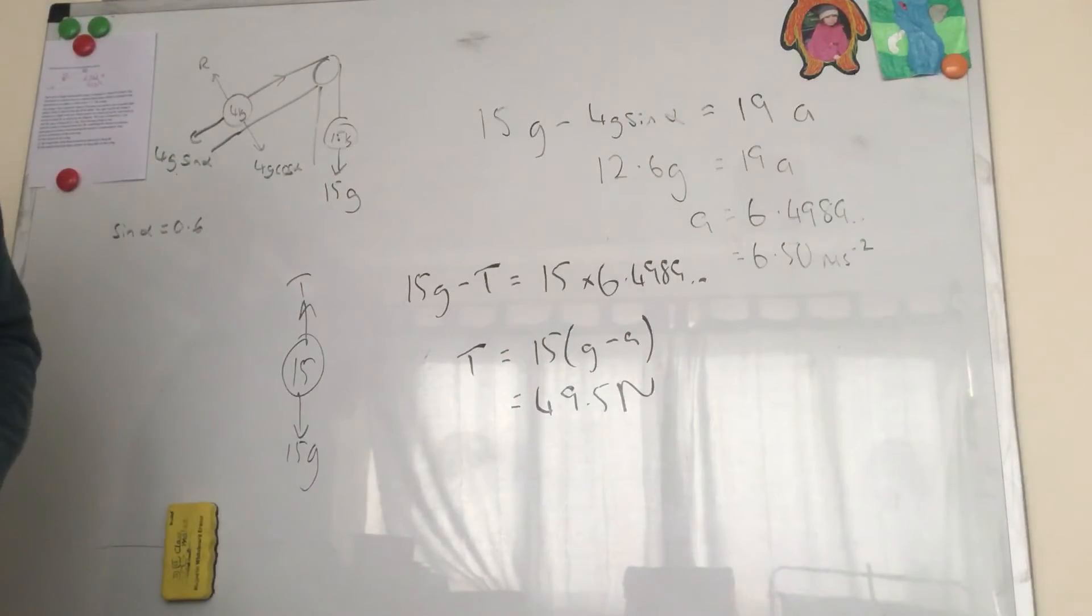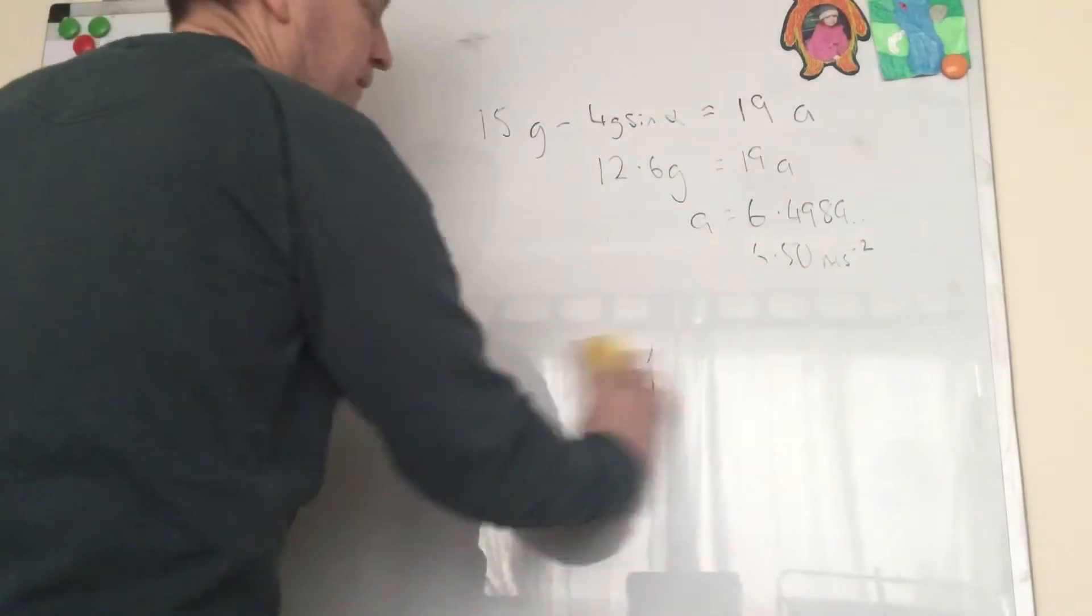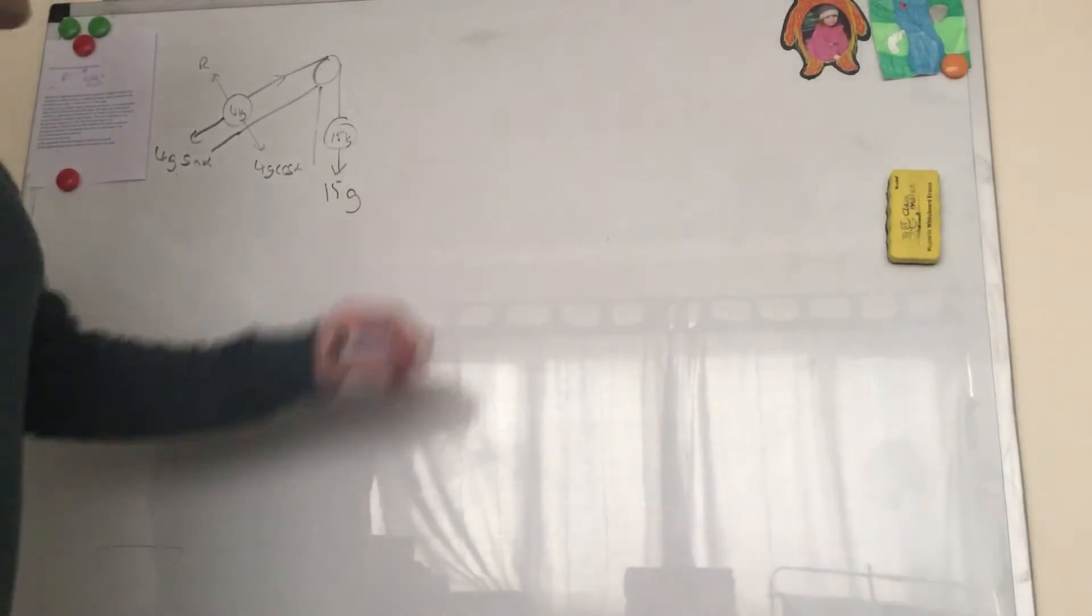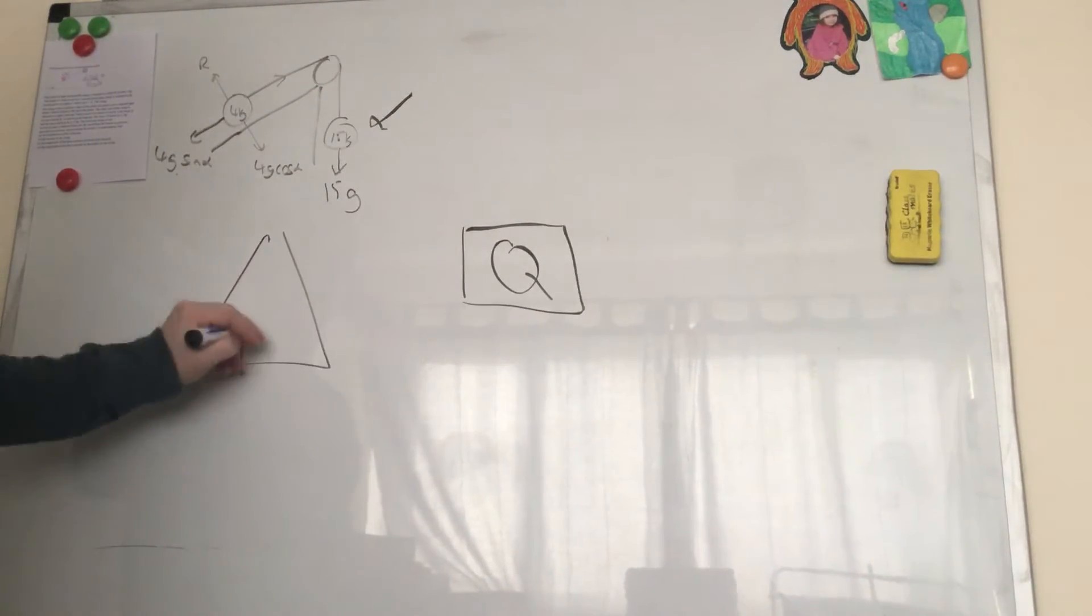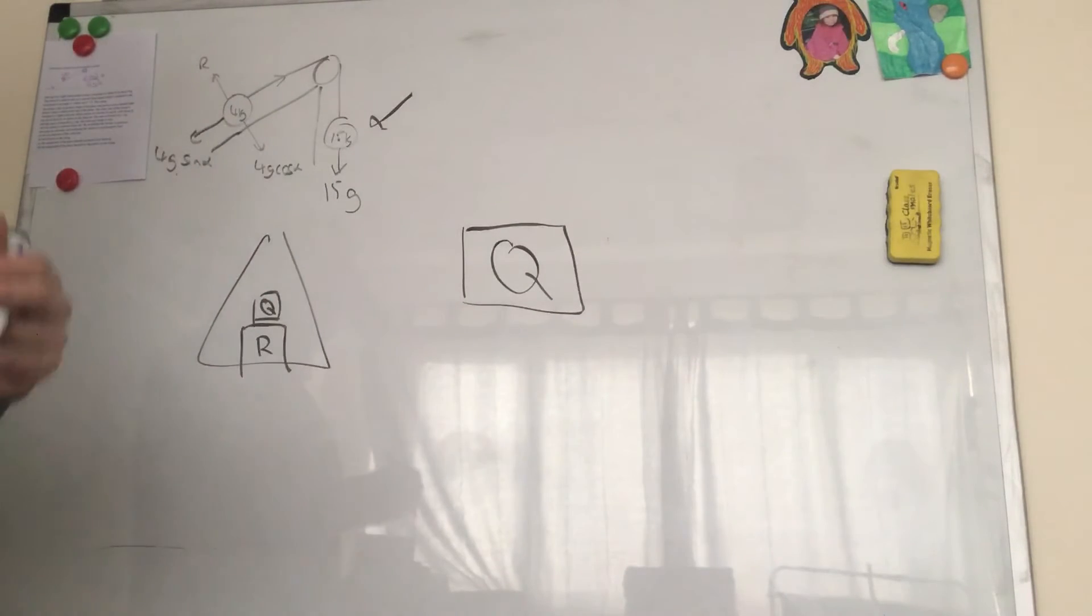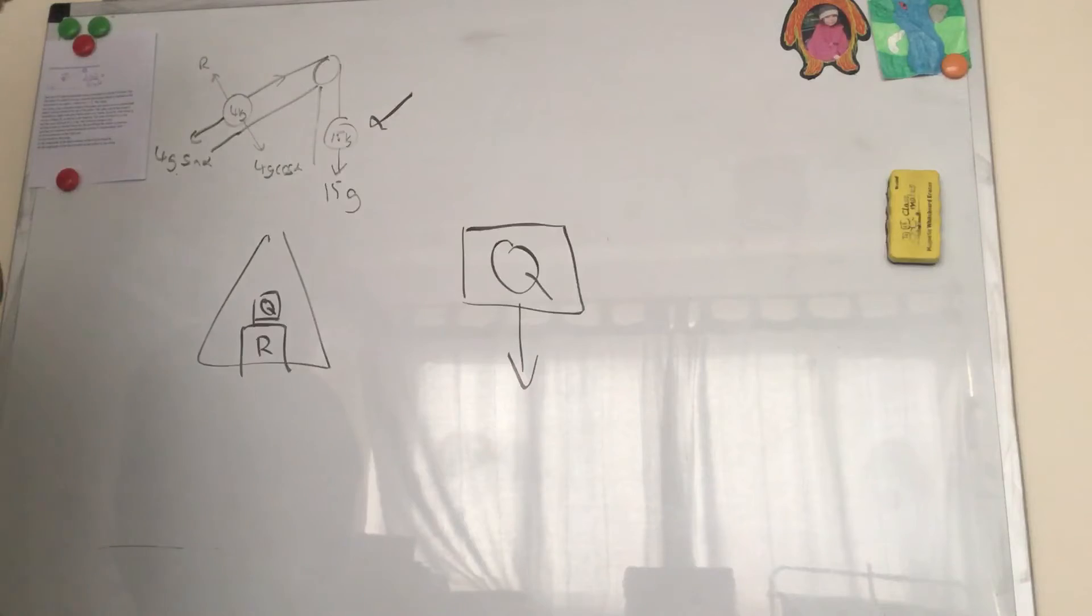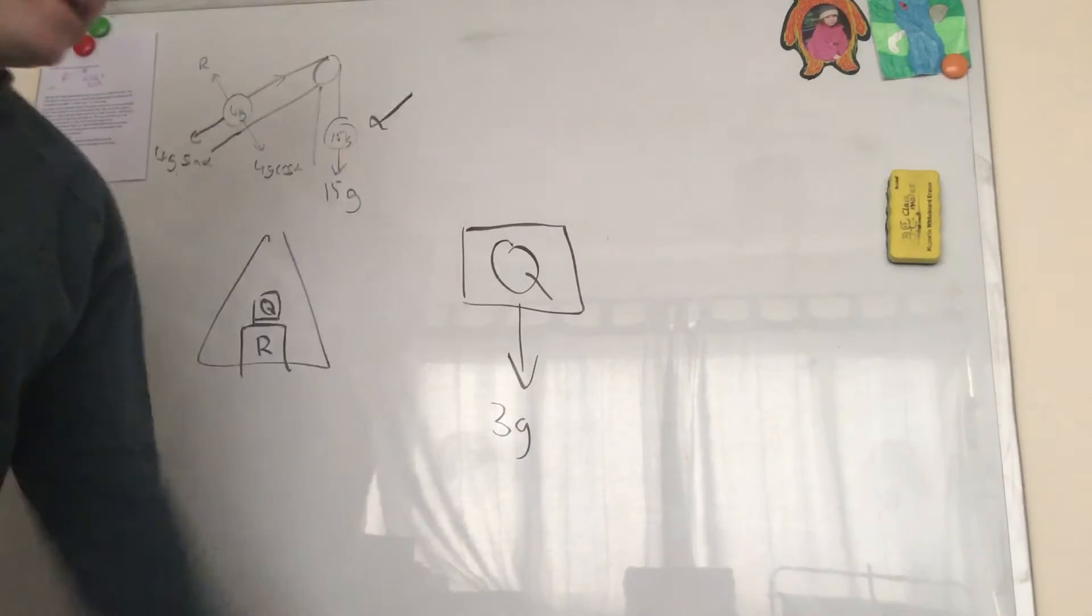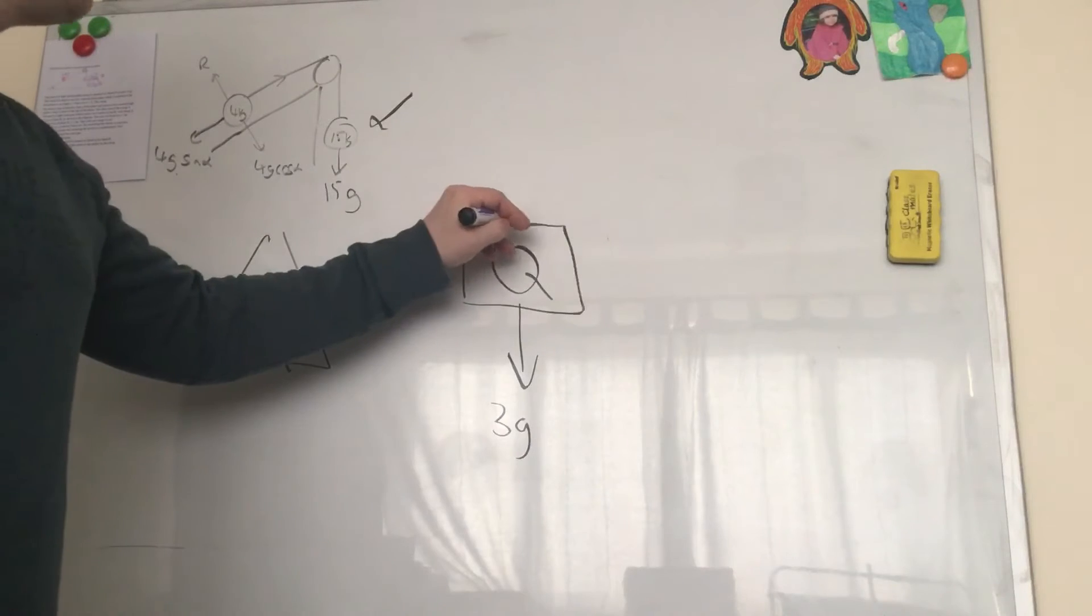Part C is find the magnitude of the force exerts on Q by block R. So we zoom in on block Q. Block Q is in here sitting on top of block R, so there's block R, there's block Q. I'm going to look at just the forces acting on block Q. So acting on block Q we've got its weight, its weight is 3g.